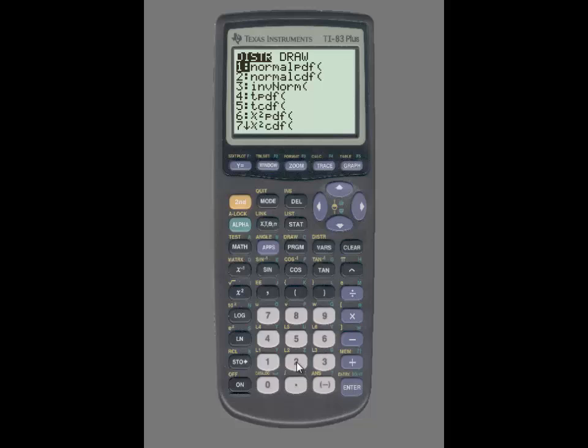Normal CDF is number 2. With normal CDF on the home screen, you then need to enter in a lower bound and an upper bound.